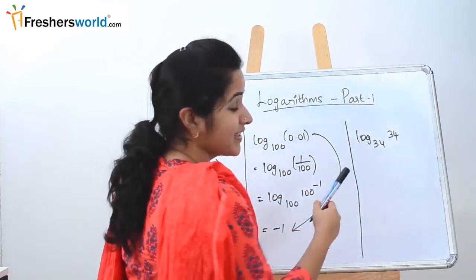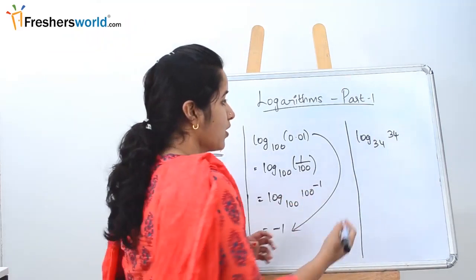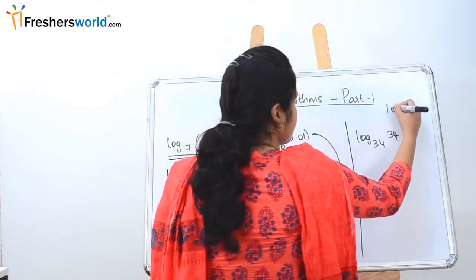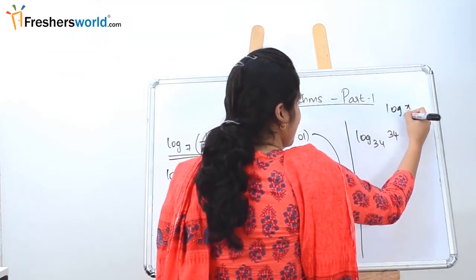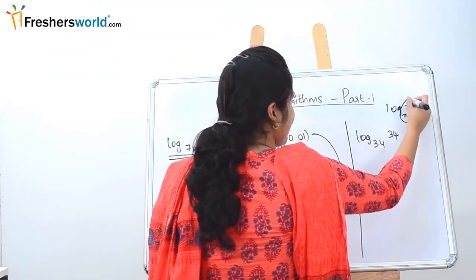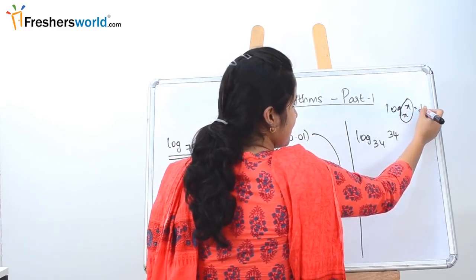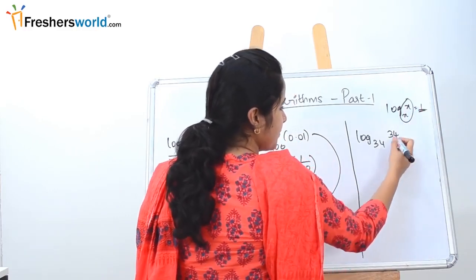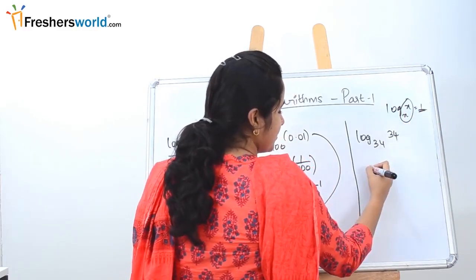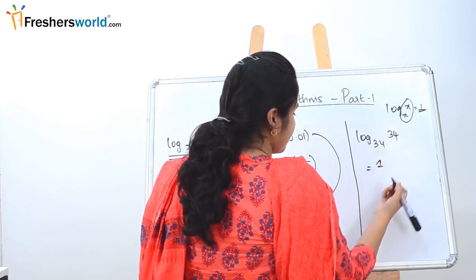The next sum is very simple — it's a direct sum. As you know, log x to the base x is equal to 1. Both the values should be the same, then the value is equal to 1. So, both are the same here, and the value is nothing but 1.